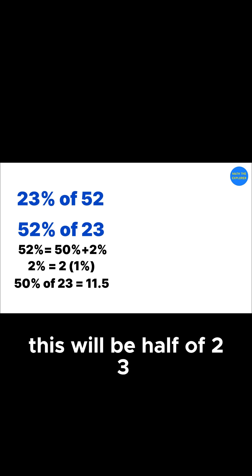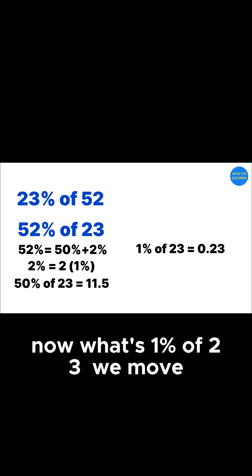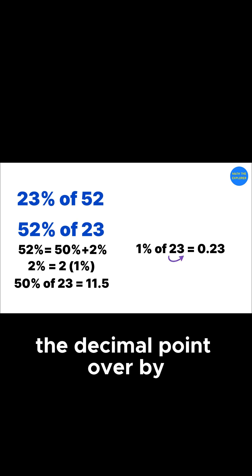This will be half of 23, which is equal to 11.5. Now, what's 1% of 23? We move the decimal point over by two spots, and this is equal to 0.23.